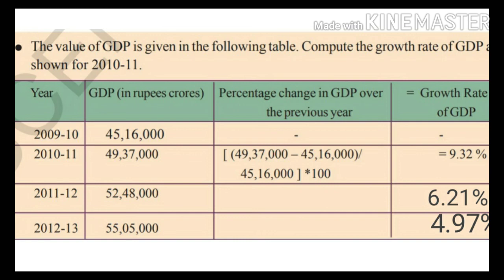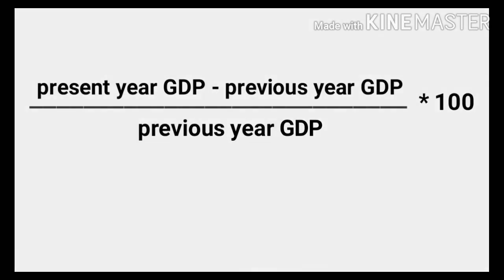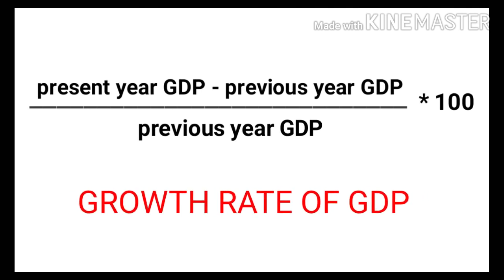The growth rate of GDP is shown in a table. For example, in 2010–11 the growth rate of GDP was 9.32%. To calculate the growth rate of GDP, we subtract the previous year's GDP from the present year's GDP, divide by the previous year's GDP, and multiply by 100. The result equals the growth rate of GDP.